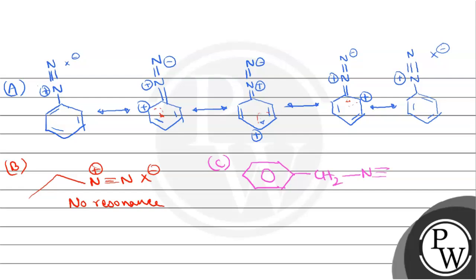Now let's see in option C. In the middle group, CH2 has come, so this is no resonance, because there is a conjugation break from CH2. There is a conjugation break from CH2, so this is no resonance. Option D, if you want to go, then you can see CH3 attached to CH3, X-. Here there is no resonance.